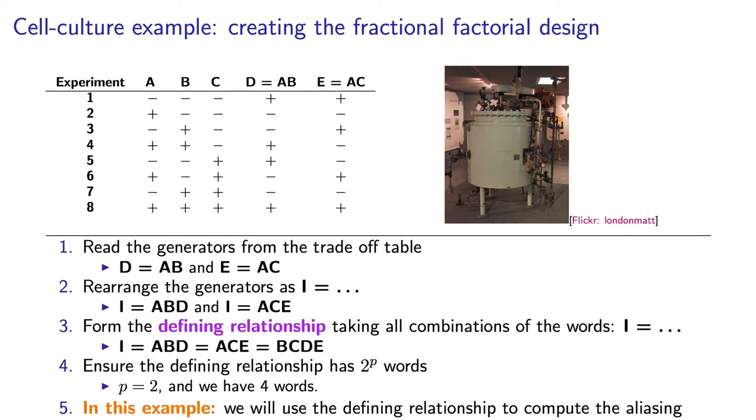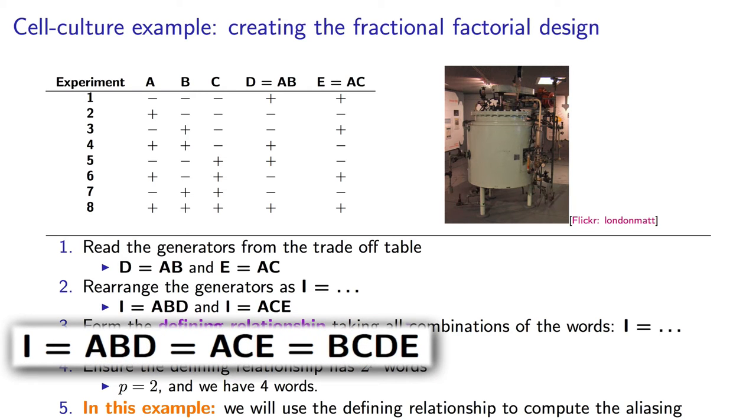Okay, we're into the final stretch here, and let's go back to our five-factor example. Remember there we had the defining relationship that I equals ABD equals ACE, which equals BCDE.